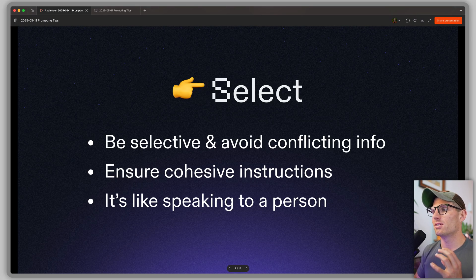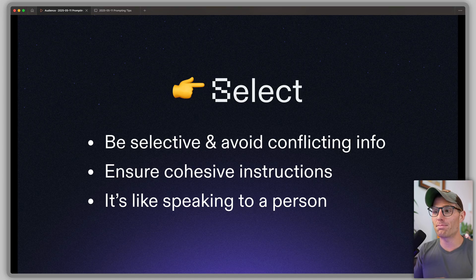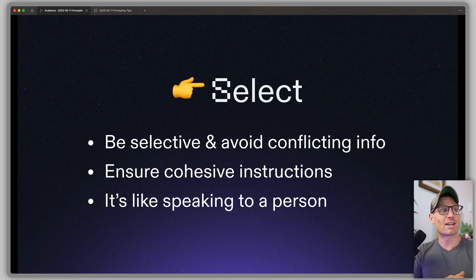Next tip: select. It's important to give AI a lot of information — context, error logs, packages, scraped websites — but what's even more important is being really selective and making sure that's high-quality information that follows a cohesive line of thought. If I give you a hundred things to do and they include conflicting instructions, you're going to be confused. If I give you a very cohesive, minimalist approach and I'm very specific, you're more likely to understand. Be selective with your prompts, follow a clear line of thought, and you're much more likely to get better outputs.